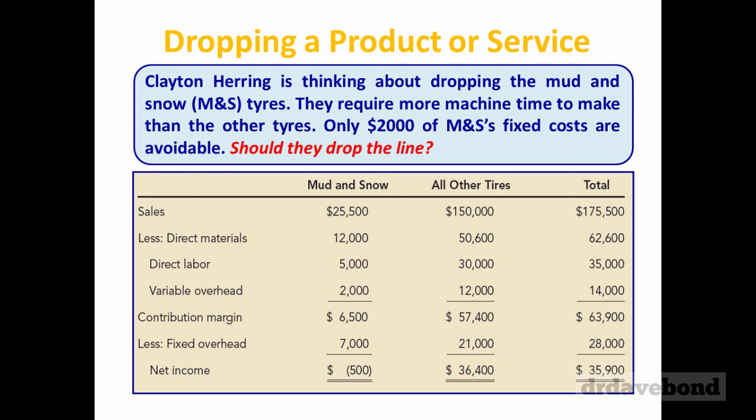With this particular company, they make a whole bunch of different types of tires. In total, they make $35,900 in income. But if you look at just the mud and snow option, they're losing money — specifically $500. And you might think: shut it down. But let's think about what's relevant here.